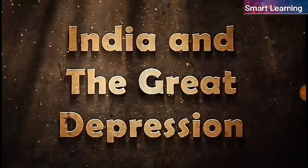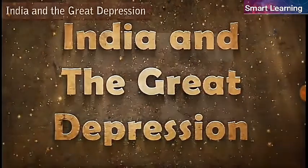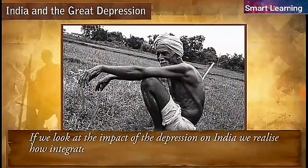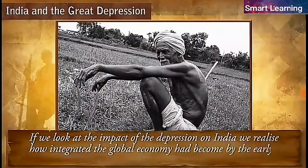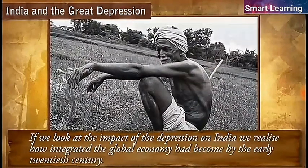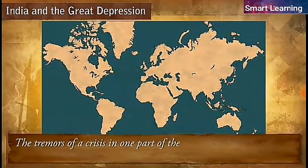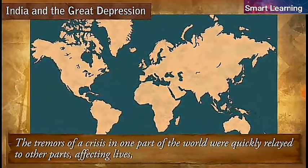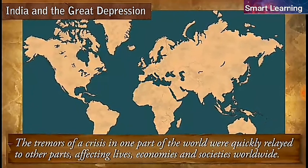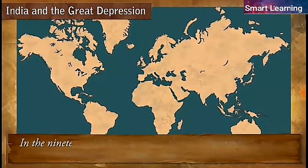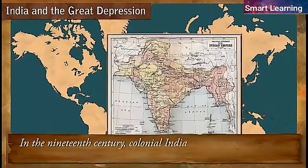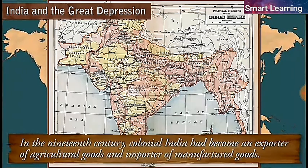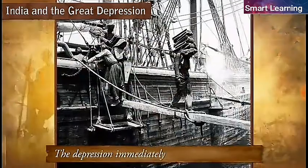If we look at the impact of the depression on India, we realize how integrated the global economy had become by the early 20th century. The tremors of a crisis in one part of the world were quickly relayed to other parts, affecting lives, economies, and societies worldwide. In the 19th century, colonial India had become an exporter of agricultural goods and an importer of manufactured goods. The depression immediately affected Indian trade.